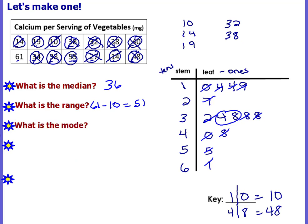What is the mode? The mode is the one that you see the most often — specifically, the leaf you see the most often. I have two fours and three eights. So the three eights are the ones we see the most often. But the mode is not eight — I have to put the stem in front of it. The three in front of the eight makes it thirty-eight.